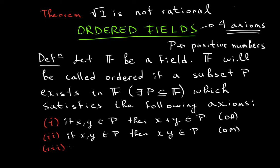What does this mean? For each x in the field, only one can be possible.